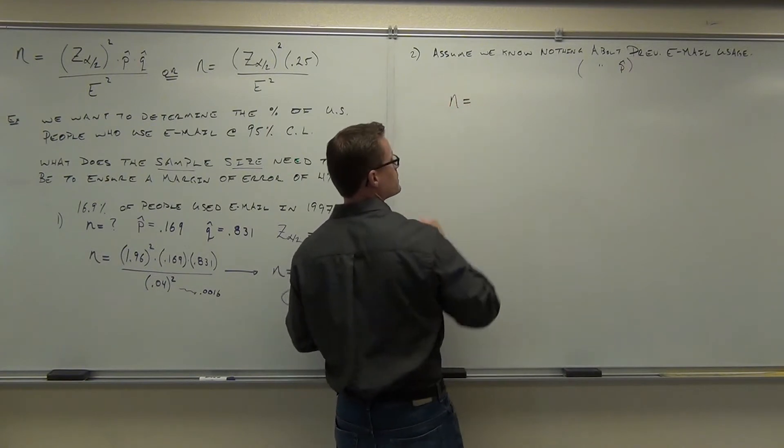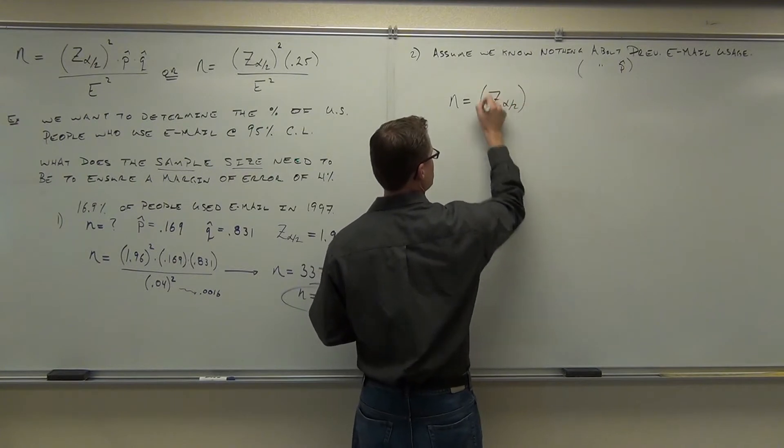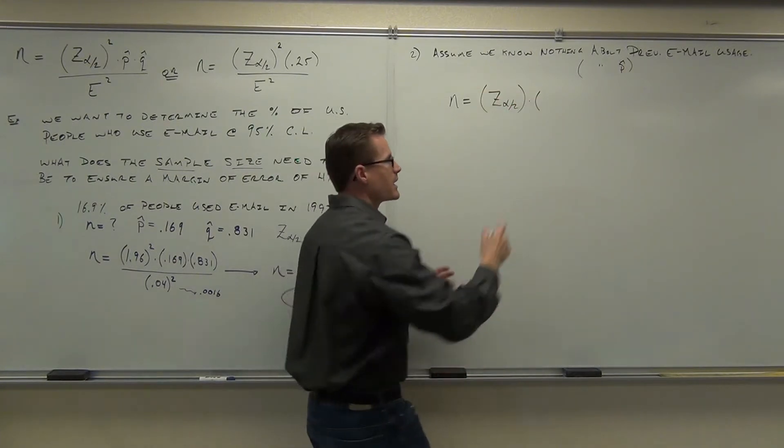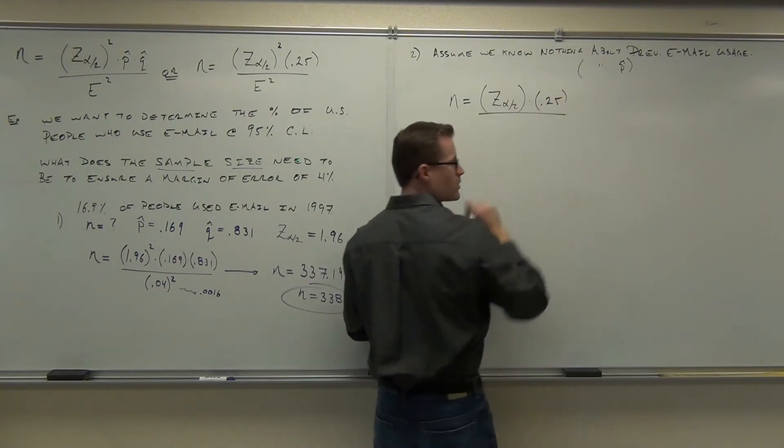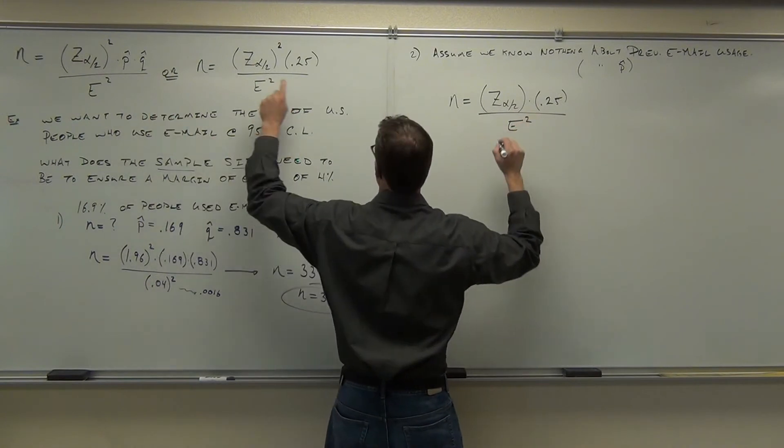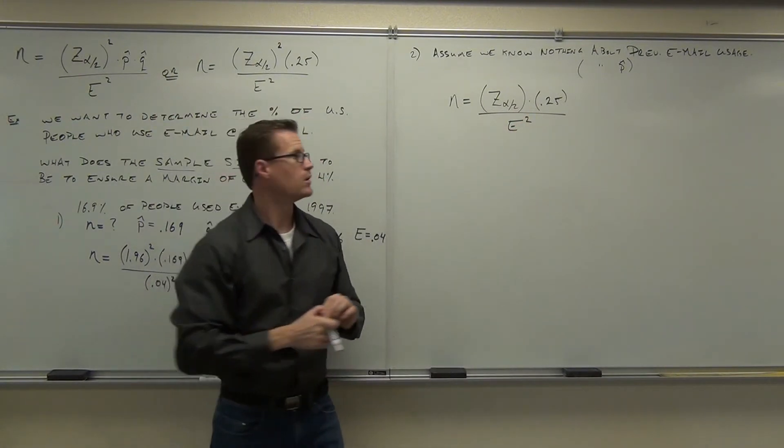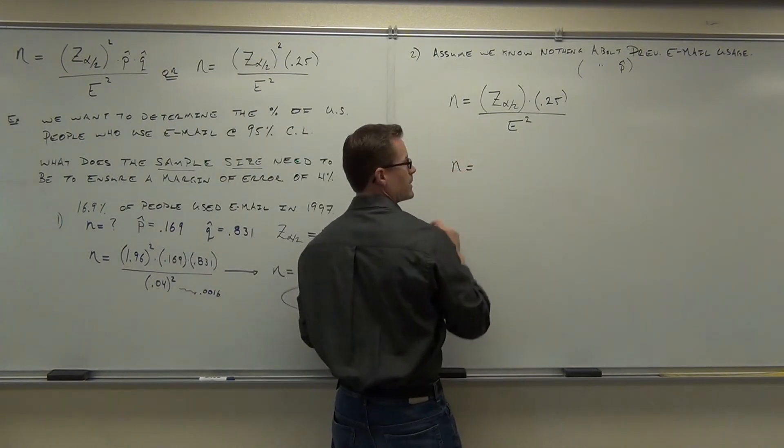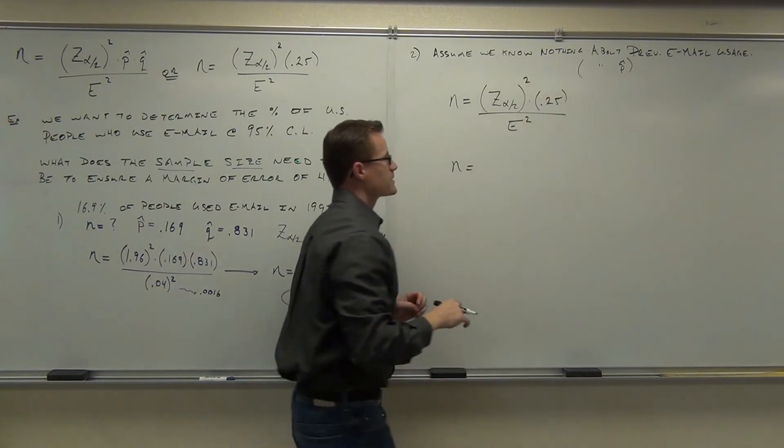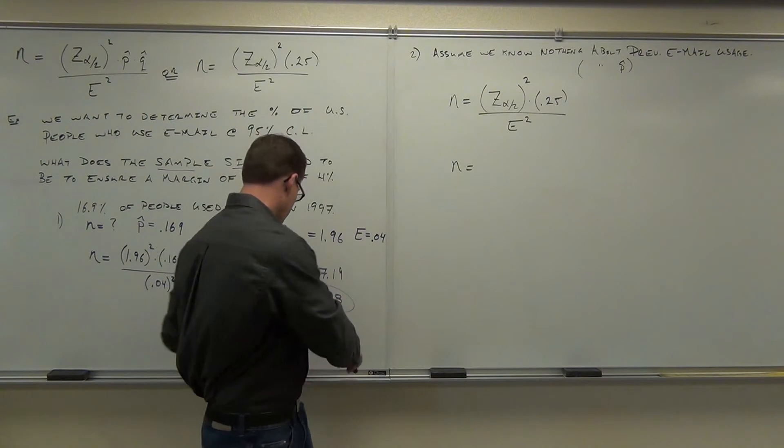So assume this and we're good. Now our sample size is going to be z alpha over 2 squared. Instead of p-hat q-hat, I'm eliminating that. I'm saying I don't know anything about it. If it doesn't give you a proportion, you can't do that formula. You're stuck with this one. Can I still fill it out? Yeah, that's a little bit easier actually. We'll have a z alpha over 2. Do you still want to be 95% confident?